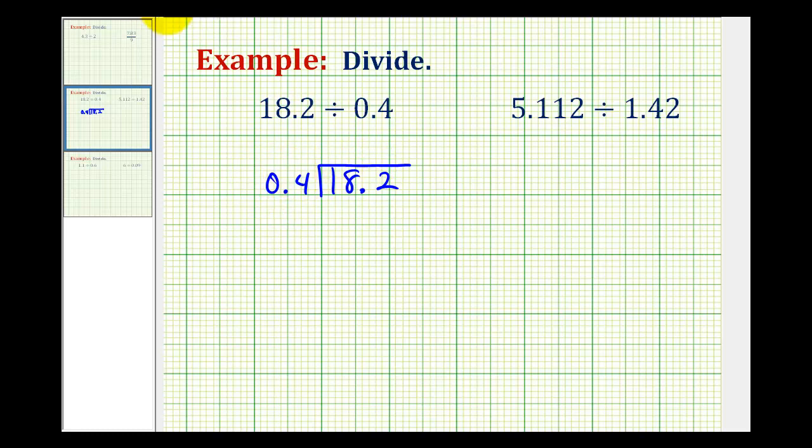And we can do that by moving the decimal point one place to the right. Notice how now we would be dividing by four. And we can make this move as long as we move the decimal point in our dividend as well. So we'll take this decimal point and move it to the right one place to here.